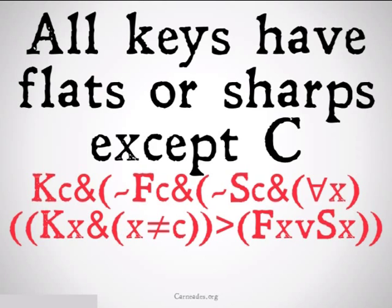All keys have sharps or flats except C. You can translate this as C is a key, and it's not the case that C has flats, and it's not the case that C has sharps, and for all X, if X is a key, and X is not identical to C, that implies that X either has flats or sharps.